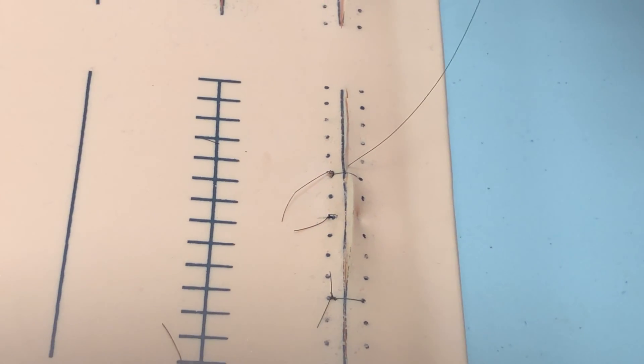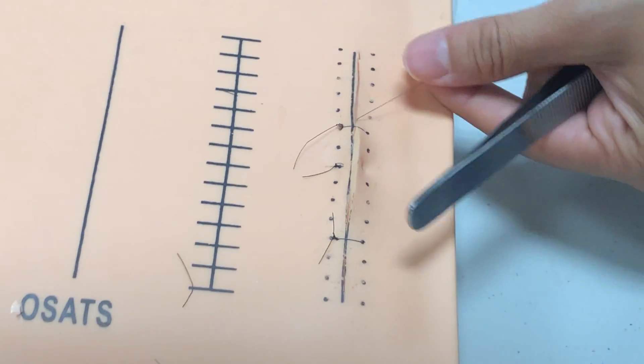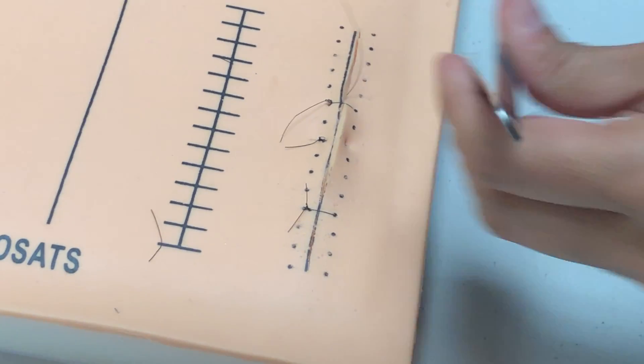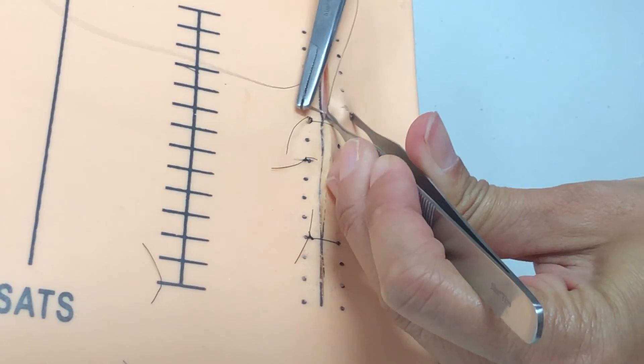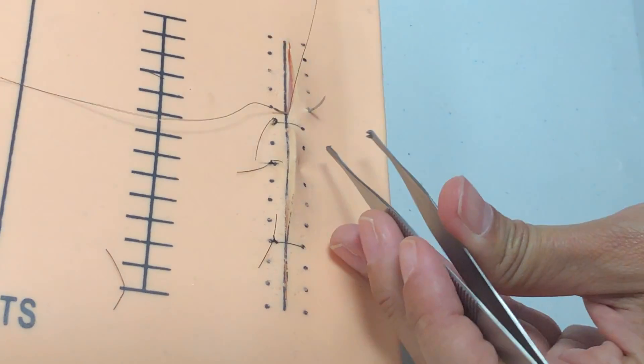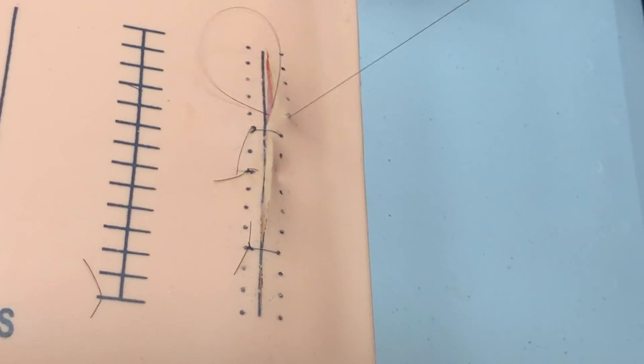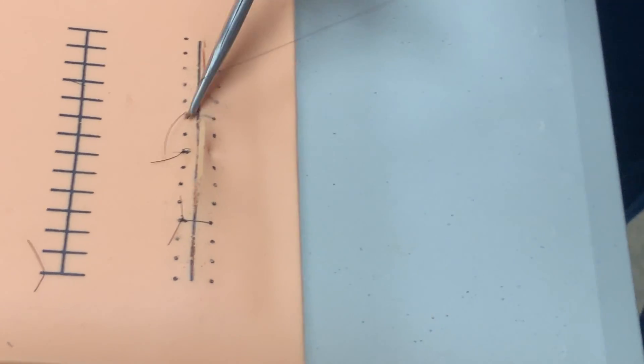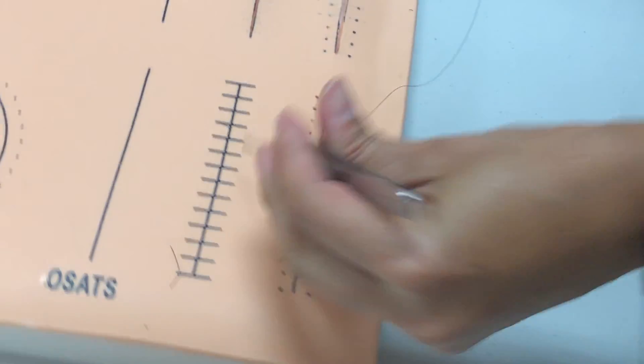Then we're going to reload and we're coming diagonally to the next dot from underneath. So we're going to grab here, we're going to come back underneath here, and we're going to pop through on that side. It's diagonal underneath the skin so that it can be parallel on top of the skin. It just looks a lot cleaner.